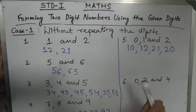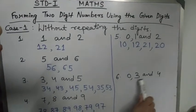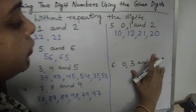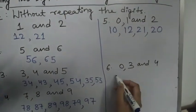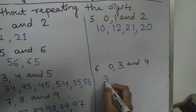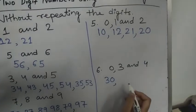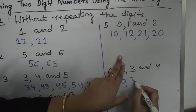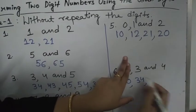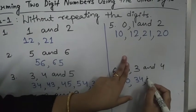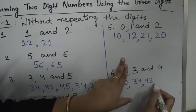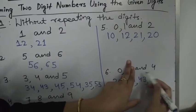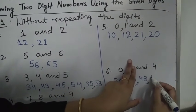Now number 6 — digits 0, 3, and 4. Cover 4 first — we get 3, 0 — that is 30. Then cover 0 — we get 3, 4 — that is 34, and reverse: 4, 3 — that is 43. Now cover 3 — we get 4, 0 — that is 40.